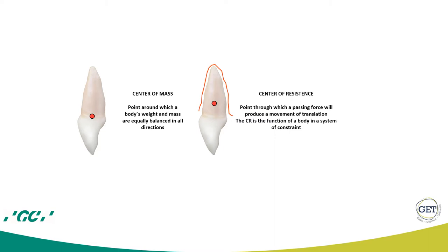For example, if at the center of resistance we have only a force, we have a translation. If at the center of resistance we have only a moment, we will have a pure rotational movement. Most of the time we have a combination of the two — a force plus a moment — since most of the movements we apply are rototranslations.